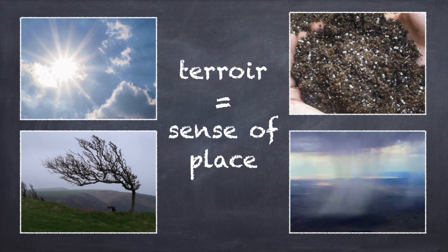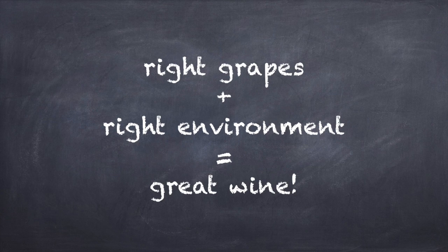Terroir varies significantly across wine regions, but can even differ greatly within a region, or even from individual vineyard to vineyard. Even in an ideal location, you can't just plant any old grapes. Certain grape varietals grow best in particular environments, and so the wine grower must carefully match the individual grape vines to their surroundings. It's an art that takes many years of education and trial and error to perfect.